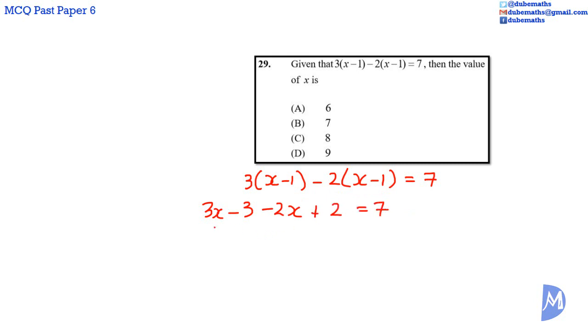Add in like terms. 3X minus 2X is equal to positive 1X, and negative 3 added to negative 2 is equal to negative 1 is equal to 7.